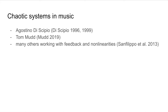If we think of chaos in music, we have several examples. Two of the most important are probably Agostino Discipio's work on iterative maps, mostly using the sign map when he did his work in the late 90s. Some of his work was based on modeling environmental sounds through chaotic equations. And then we have Tom Mudd, who worked a lot with the Chuovsky oscillator.